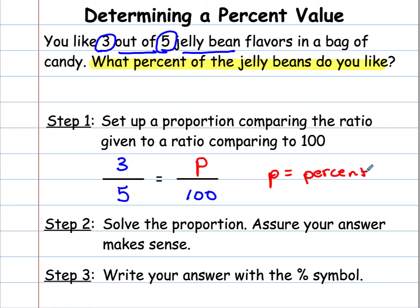So the next thing we want to do is we want to solve the proportion. So we can use the different methods that we've learned. In this case, I see that five times 20 would give me 100. So I would repeat by multiplying three times 20 to get my percent. And I get that P is equal to three times 20, which is 60. So my answer would be 60% because I write my answer with the percent symbol.